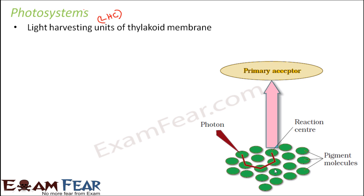Here in the picture you can see a photosystem. It consists of pigment molecules — these green colored molecules are nothing but the chlorophyll pigment molecules. Each of them are chlorophyll molecules. What is a photon? Photons are nothing but the particles of light. Light has both particle as well as wave nature, so when you talk about the particle nature of light, light is made up of photons. When the light energy falls on these pigment molecules, the light energy is absorbed and then passed on to different molecules.